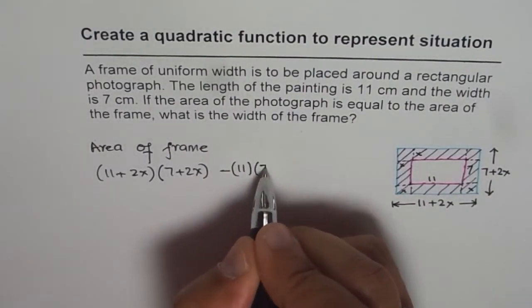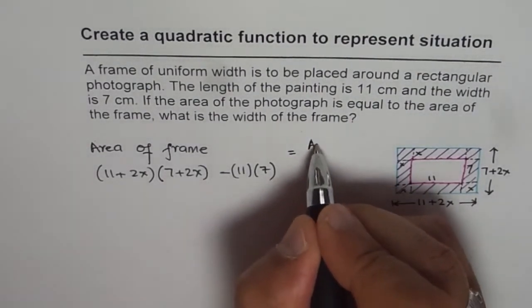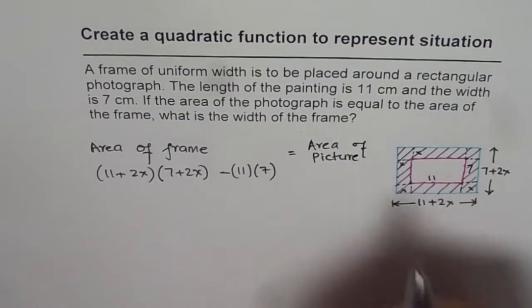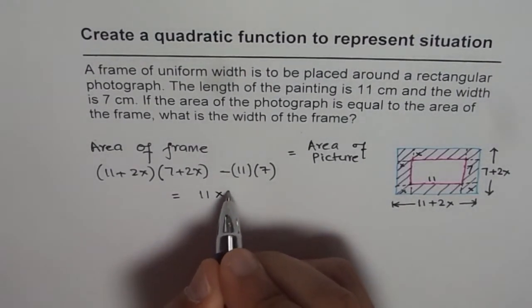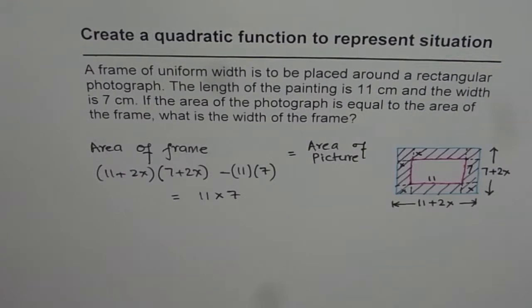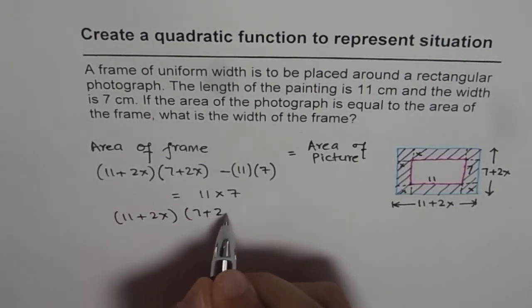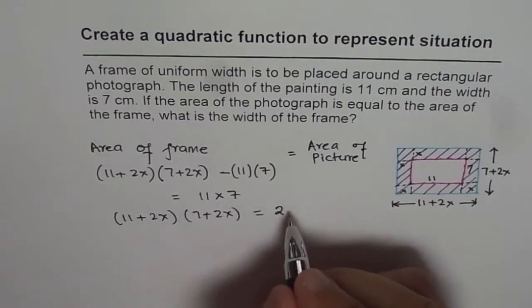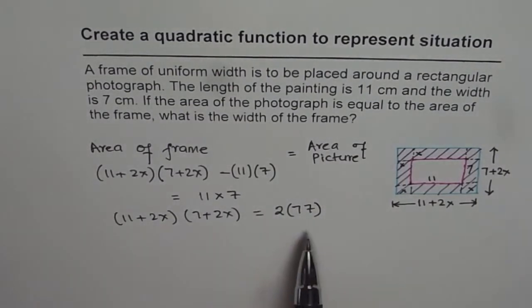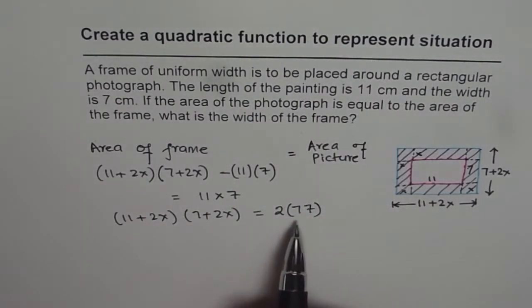That is 11 times 7. So that is the area of the frame. Now this is equal to the area of the photograph. So this whole thing is equal to inside area, which is 11 times 7. So that becomes our equation. We can rewrite this as (11 plus 2x) times (7 plus 2x) equals 2 times 11 times 7, which is 154. Just create a quadratic function to represent the situation — that is your quadratic function which represents this particular situation.